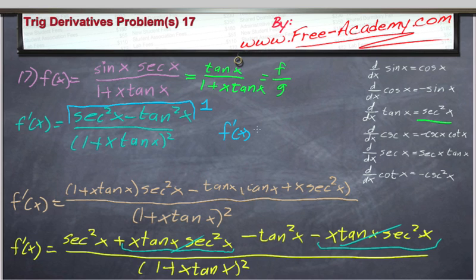So, our first derivative, f prime of x, is equal to 1 over 1 plus x tangent of x squared. And there we have it, the derivative in the most simplified form.